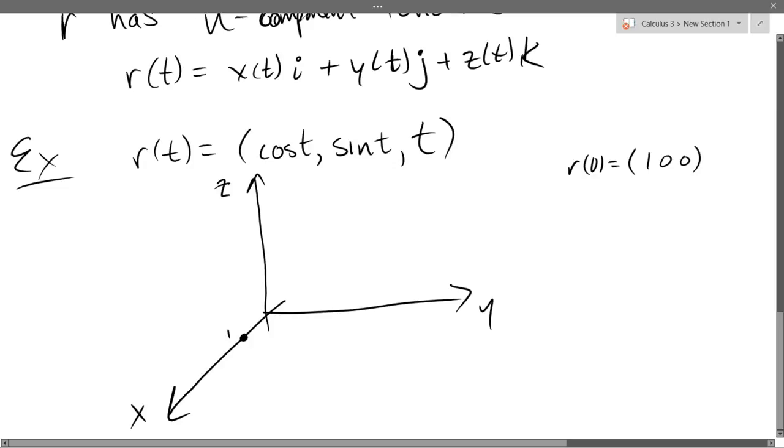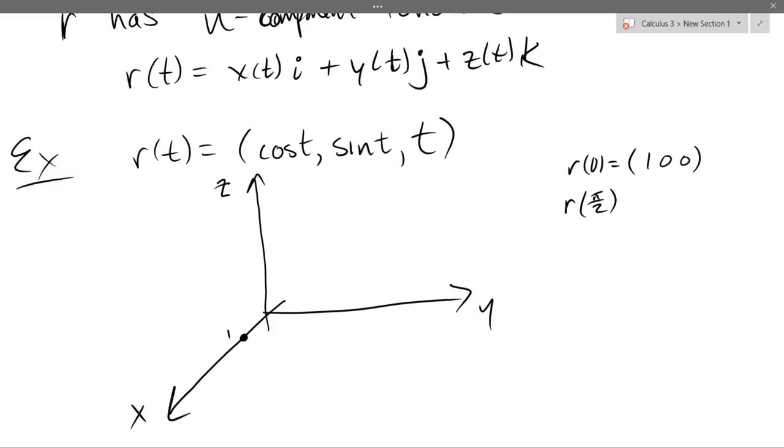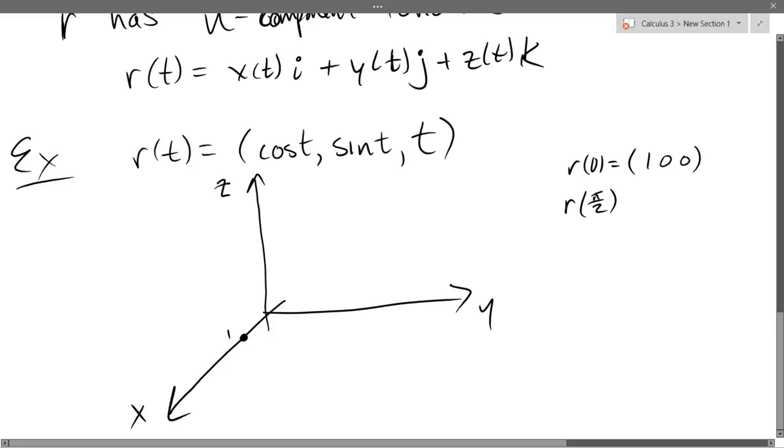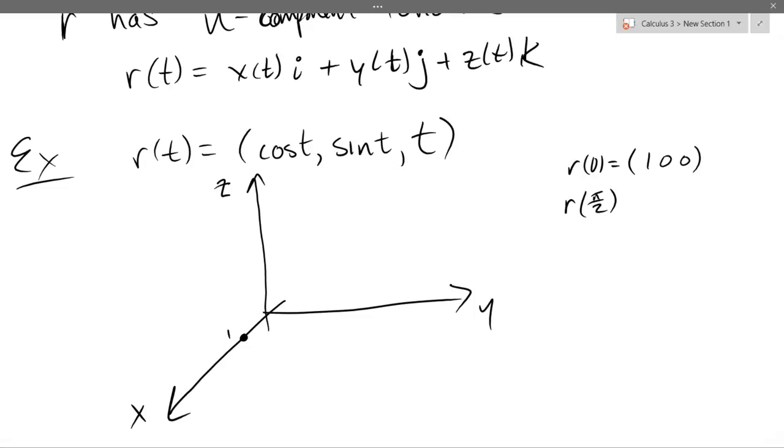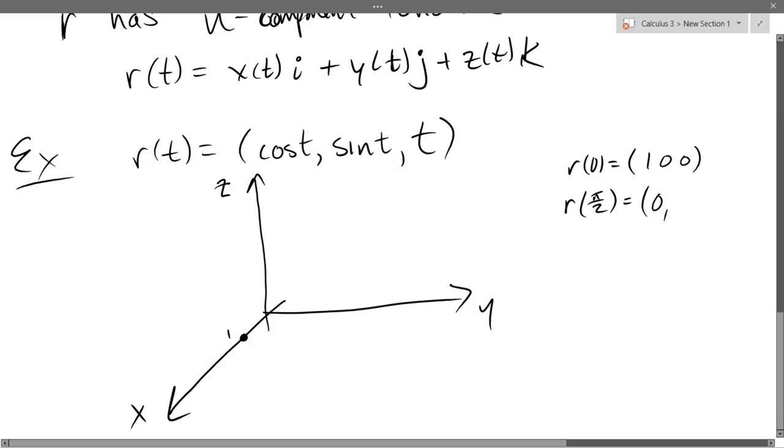What T value will put me above the Y axis, though? We'll look at R of pi over 2 is pretty easy to find. We've got 0, comma, 1, comma, our Z value is pi over 2. So we're going to be above the point on the Y axis. We're going to get there by spiraling. This is going to create a spiral.